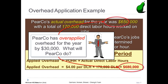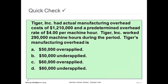How do we dispose of over-applied overhead? As an example: Tiger Company had actual manufacturing overhead of $1.2 million and a predetermined overhead rate of $4 per machine hour, working 290,000 machine hours. Tiger applied $1.16 million but incurred $1.21 million of actual overhead, resulting in $50,000 of under-applied overhead.